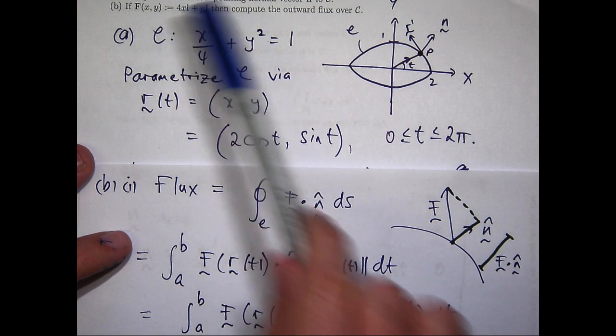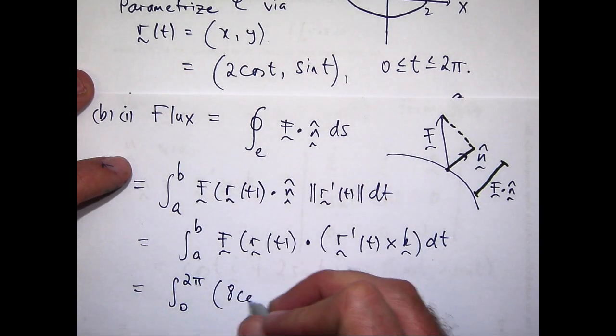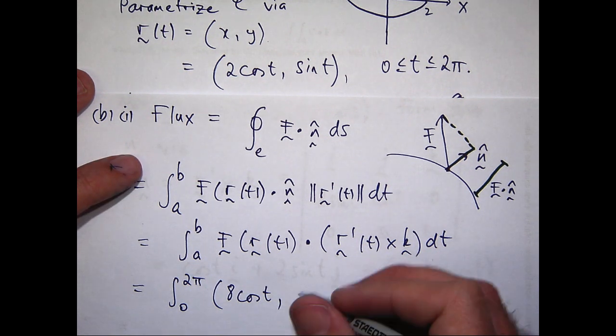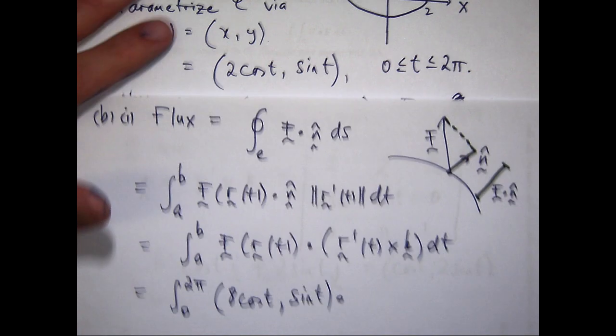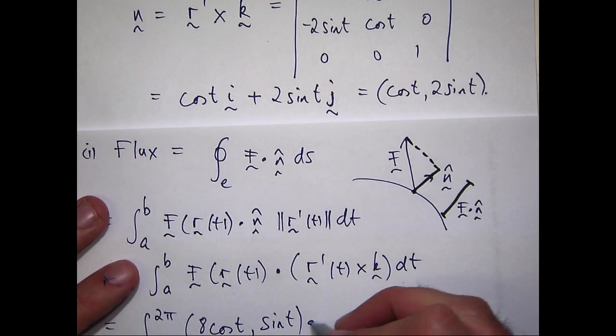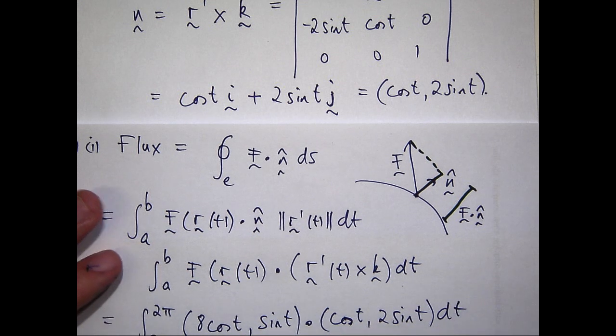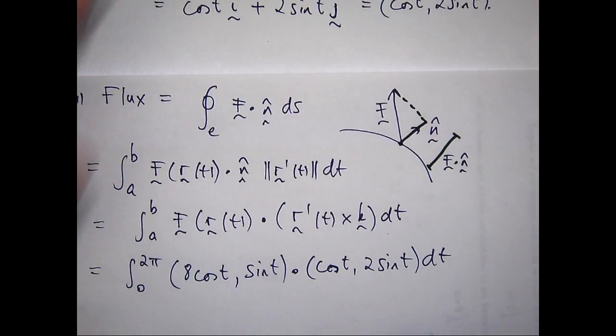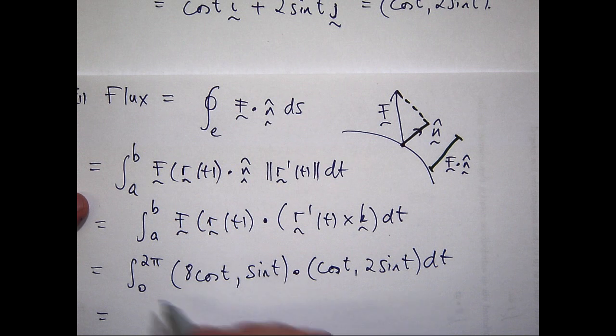So I'm going to get 8 cos t and sin t dotted with this. And we computed that in part a. So that is just cos t, 2 sin t dt. So let's consider this. When I expand, I'm going to get 8 cos t squared plus 2 sin t squared.